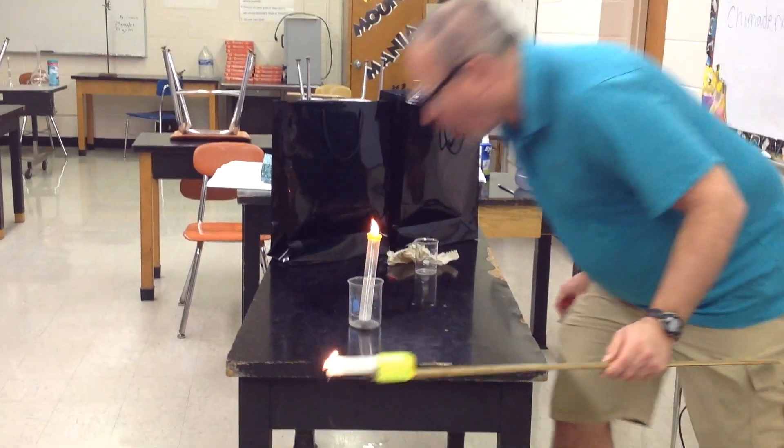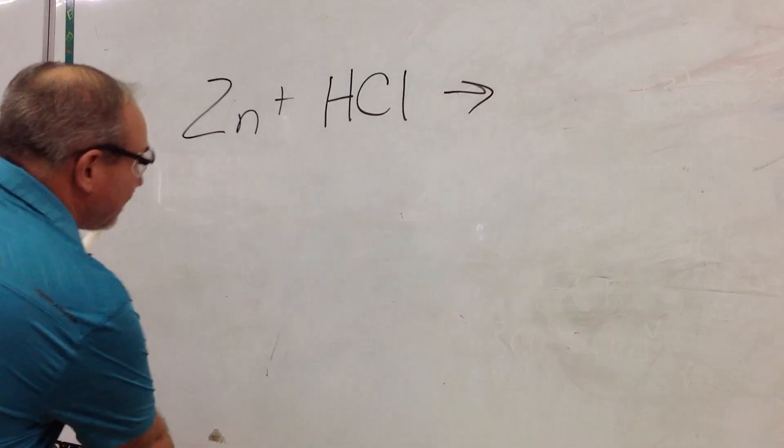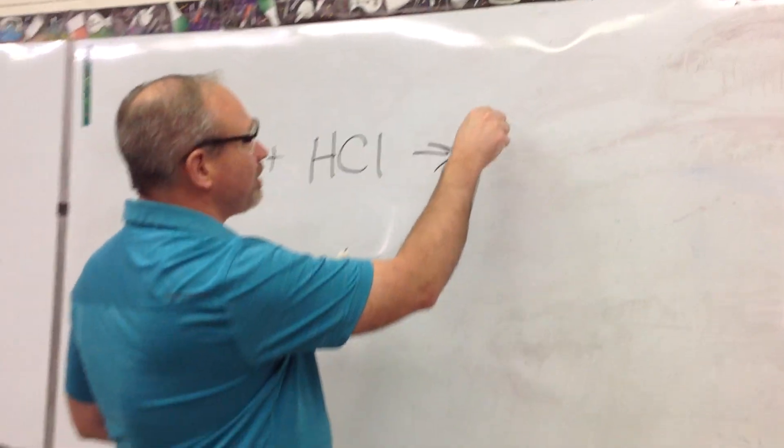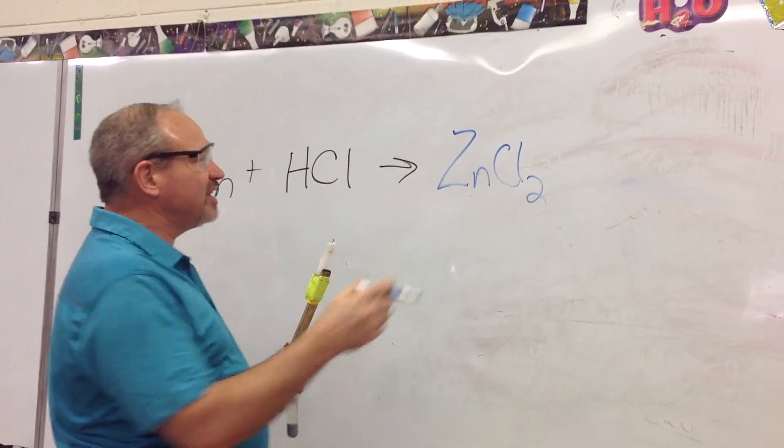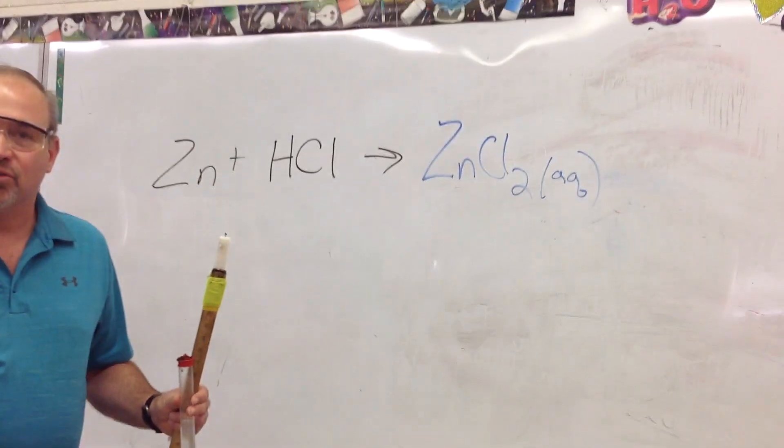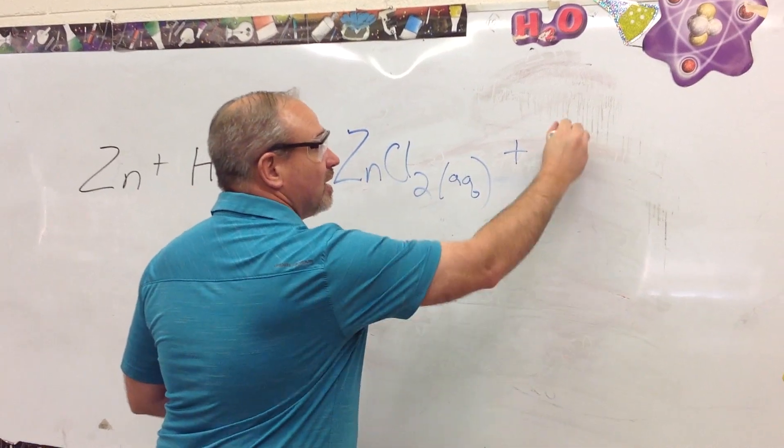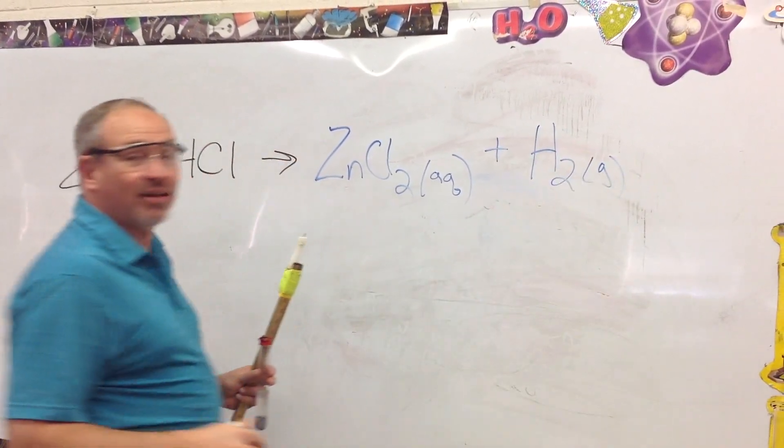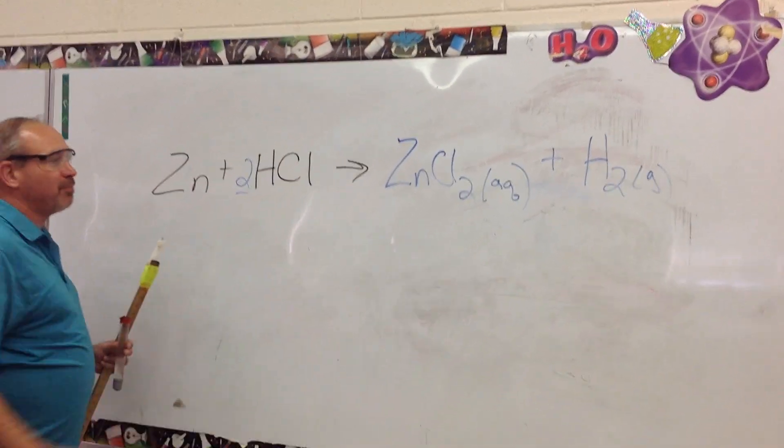Now let's talk about as we rewrite the equation. What did we actually make? We made zinc chloride. Well, that's in the aqueous state - that means it's a liquid, so it's just a salt dissolved in a liquid. Plus hydrogen gas - that's what you heard explode. And of course, we can't just leave it that way. We have to balance it with a beautiful two right there. Thank you for joining us for this single displacement reaction.